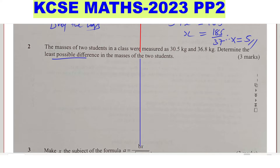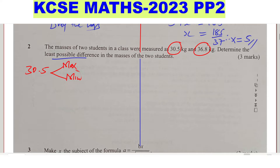The first thing you're going to do — the weights given are 30.5 and 36.8, so we need to get the limits for each. For 30.5, we need the maximum and the minimum. The smallest unit of measurement in 30.5 is 0.1. So we want to get the absolute error: we take the smallest unit of measurement and divide by 2, and we get 0.05.